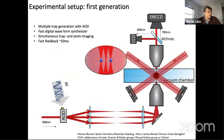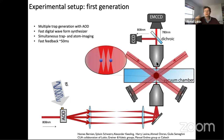Here is a high-level overview of the first generation of our experimental apparatus. The key component is an acousto-optic deflector — a device which takes input radio frequency tones and outputs arrays of laser beams. We focus these arrays in the vacuum chamber. We have two objectives: one to project the traps, and another to take pictures of atoms to figure out which traps are full and which are empty.